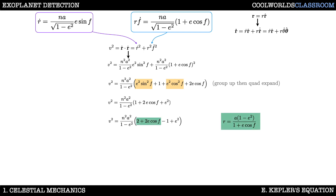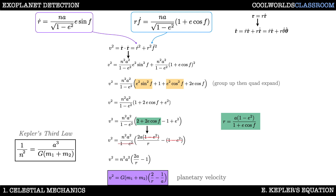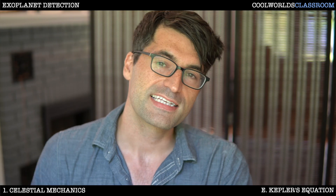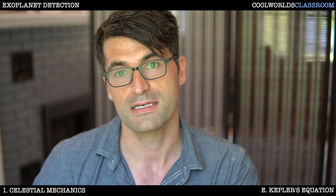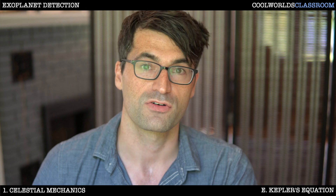By comparison to our r equation, we can replace the (1 + e·cos f) term with r. After doing so, a common (1 − e²) factor cancels out, giving us a more simplified form. Finally, replacing n²a³ using Kepler's third law gives us our planetary velocity equation. As a test of understanding, take this equation and write down an expression for the velocity of a planet in the limit of a circular orbit — just set e = 0 and solve.